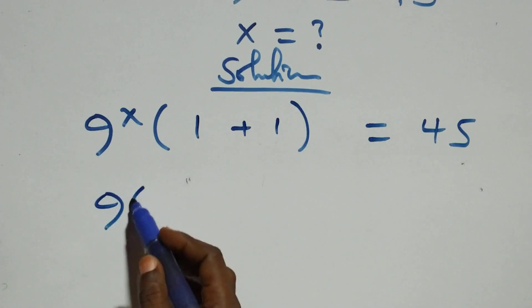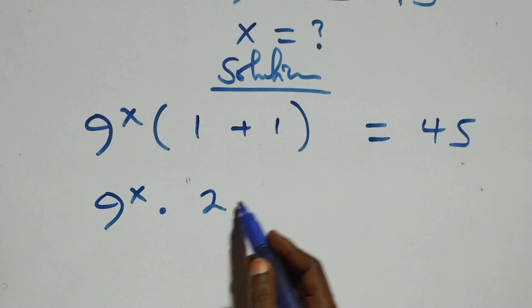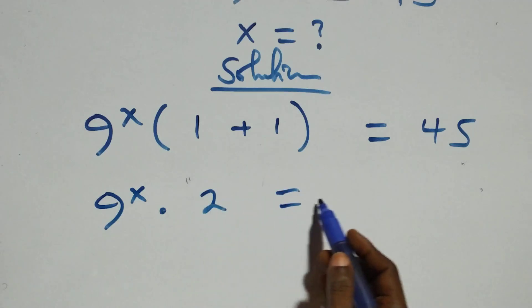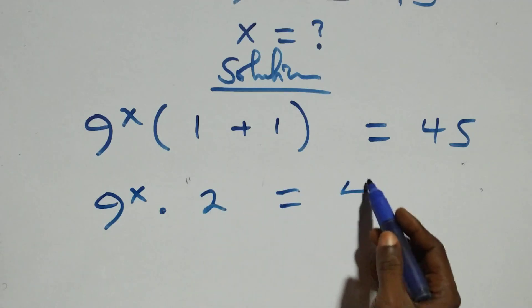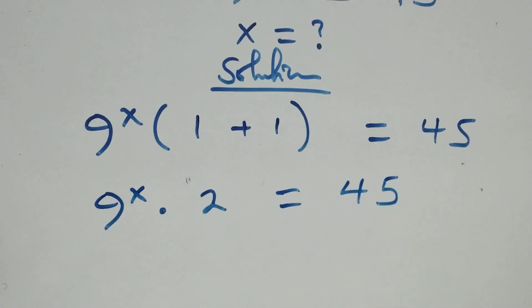9 raised to power x times 1 plus 1, that's 2, equals to 45 on this side.